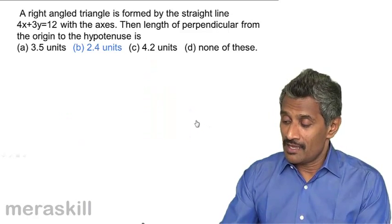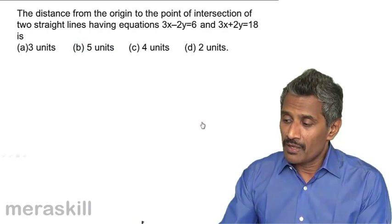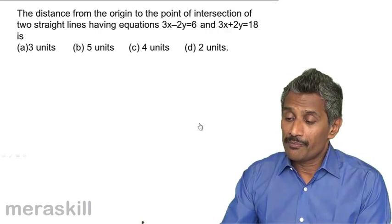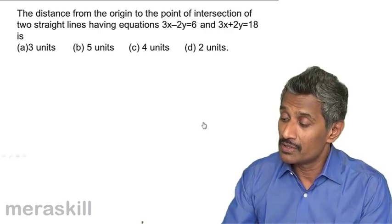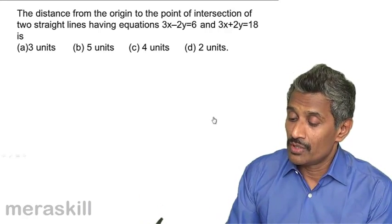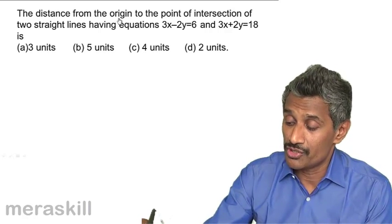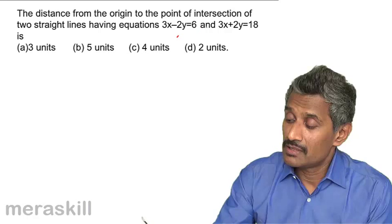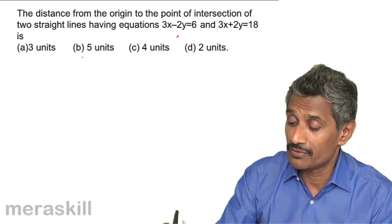Let's take one more example. The distance from the origin to the point of intersection of two straight lines having given equations. This means we need to find the distance between the origin and some point, so we need to find the point of intersection of these two lines.